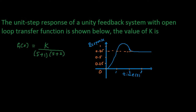For this open loop transfer function G(s), which is k upon (s+1)(s+2), if we apply a unit step input, the output is shown here. Let's draw a simple block diagram. This is our G(s) and we have applied a unit step input, and it is a unity feedback system.